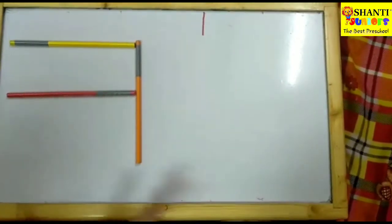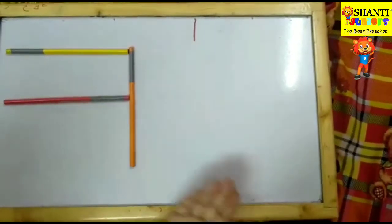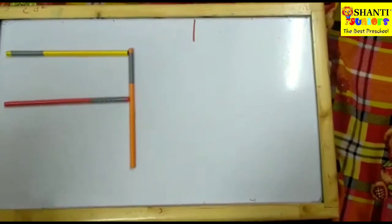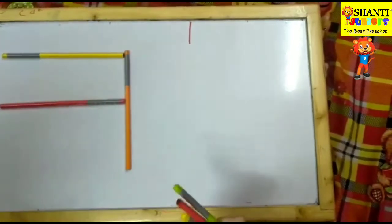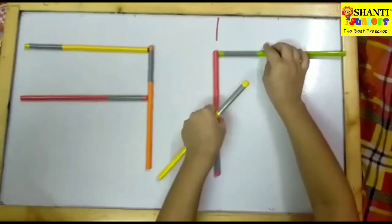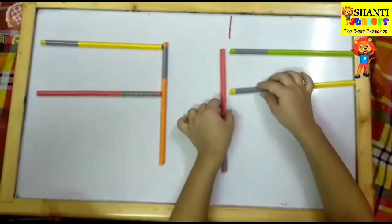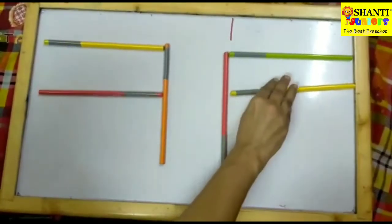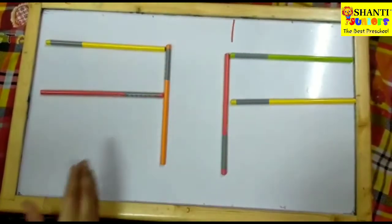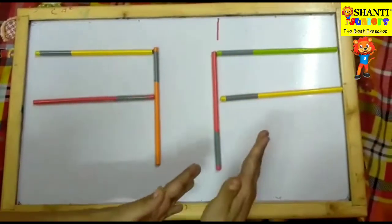So we are going to do this activity. This might help your child. You can write a letter and show the child the mirror image. Like I have made F, so you can tell the child to make F. Parents, you can take crayons or straws, whatever you have. As you can see, the child can make F. If they are getting confused, they will see the mirror image and they will see F.